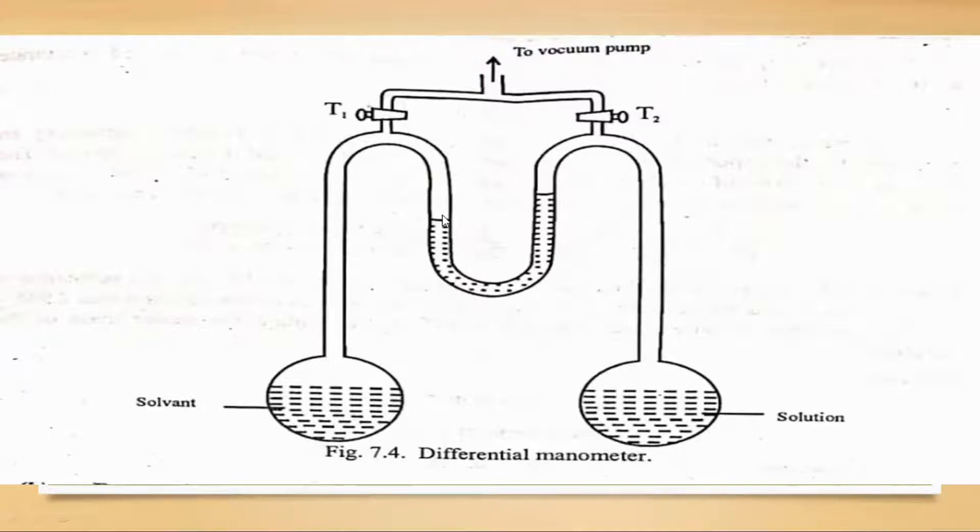The level difference here is measured as delta H. From this we measure the vapor pressure change. This is called the differential manometric method.